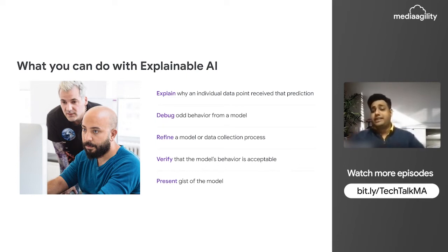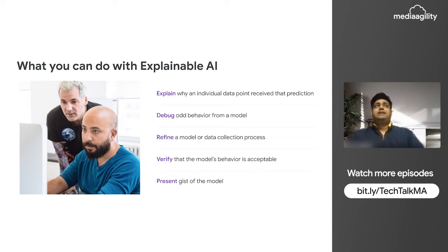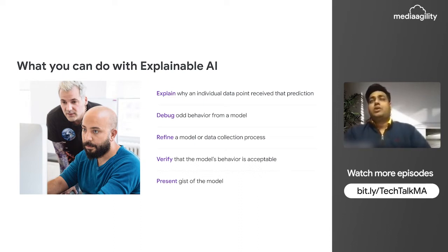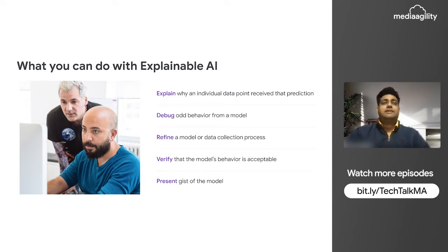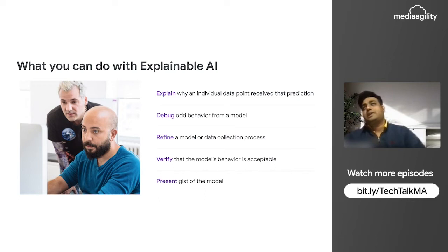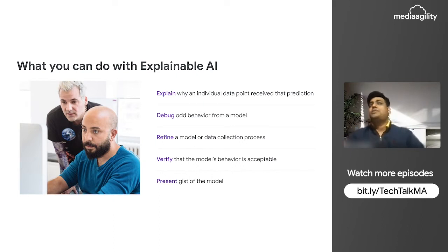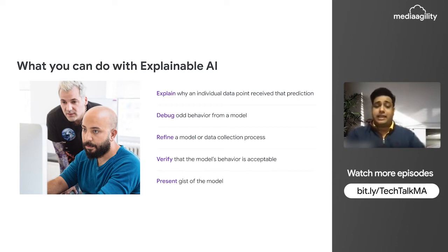With explainable AI, we can explain why an individual data point received a particular prediction. We can also debug odd model behavior. For example, if I was looking for a house in Gurgaon, for a particular house I was getting 5,000 rupees but the average in that area is around 10,000 rupees — that is odd behavior, and there has to be something in the data causing the model to predict that.